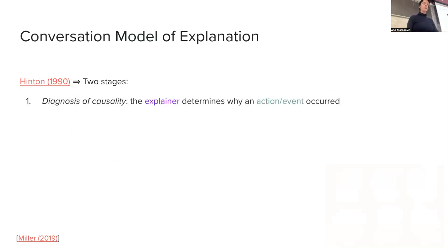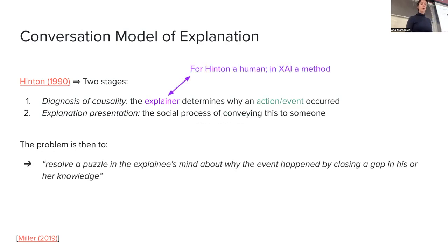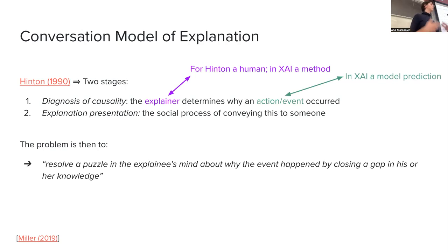He presents these two stages of explainability that are really useful to frame the kinds of explanations we talked about in the first part of the course. The first stage is diagnosis of causality, where the explainer determines why an action or event occurred. For us the explainer is an explainability method used to explain a model's prediction. So techniques we used in the first part of the course are basically techniques for diagnosis of causality — although the word 'causality' is stronger than what our explainability methods actually do, since we have talked a lot about faithfulness and how there are no faithfulness guarantees.